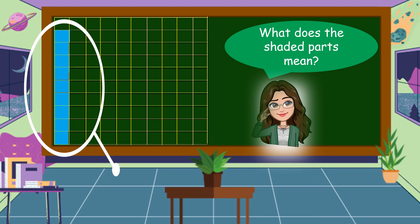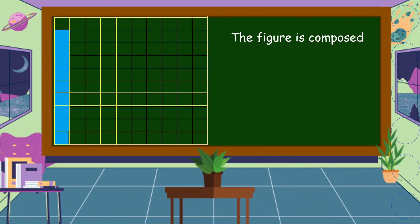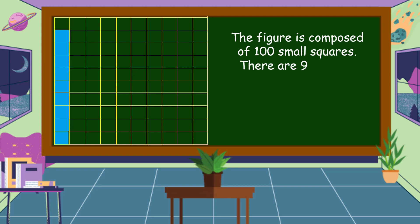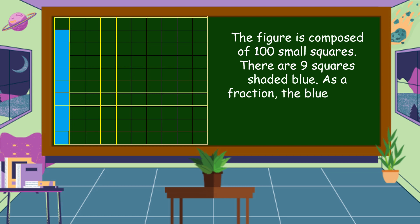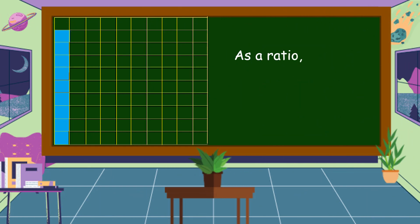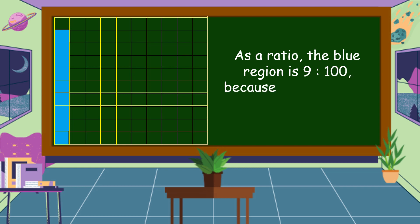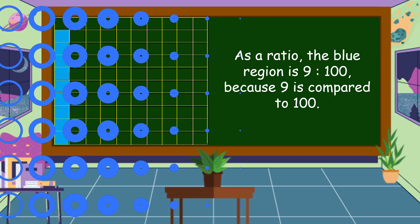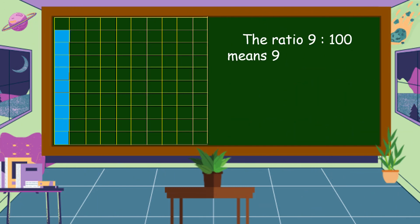What does the shaded part mean? The figure is composed of 100 small squares and there are nine squares shaded blue. As a fraction, the blue region is 9 over 100, or 9 per hundred. As a ratio, the blue region is 9 is to 100, because 9 is compared to 100. The ratio 9 is to 100 means 9 per hundred.